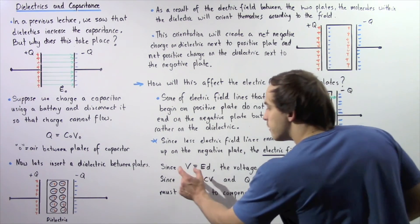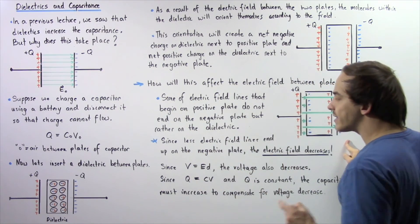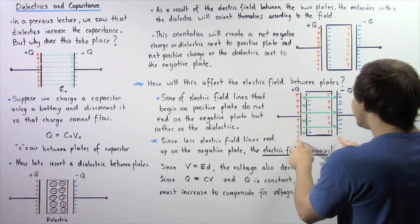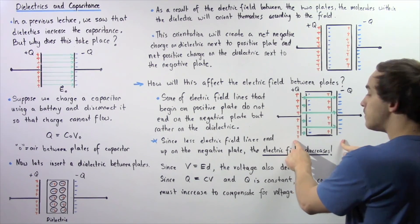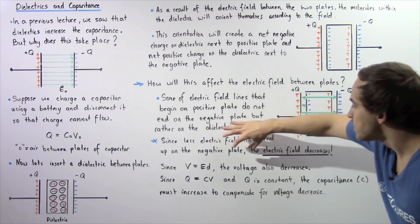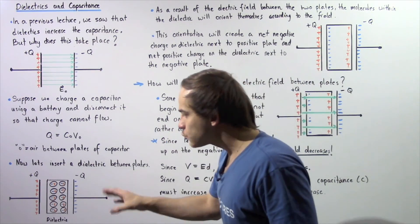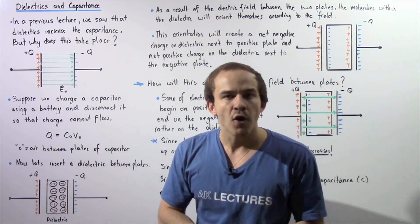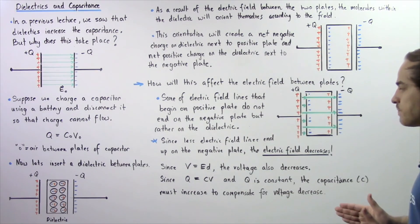Now, because the voltage between our two plates is equal to the product of the electric field between the plates multiplied by the distance between our plates, and because the distance remains constant, if the electric field decreases, the voltage will also decrease. So when we place that dielectric, not only will our electric field decrease, the voltage between the plates will also decrease.